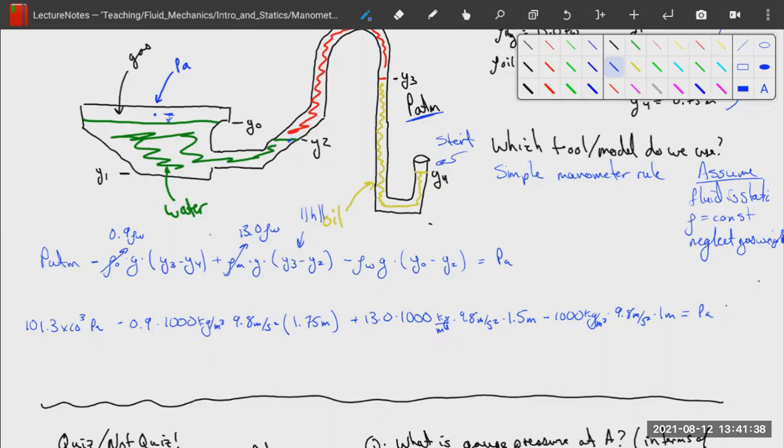And if we plug that all in and turn the crank, we find out that PA is equal to 267.1 times 10 to the third Pascals or 267.1 kilopascals. Really pretty simple thing to do.